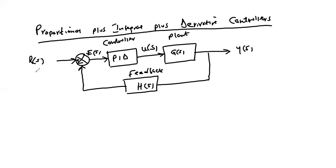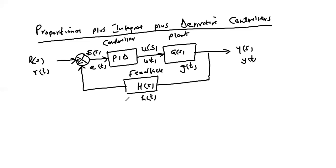If we model in the time domain, we would have input r(t), feedback h(t), plant g(t), output y(t), control signal u(t), and error signal e(t). Depending on whether we model in the time domain or s-domain, our system is represented accordingly in that block diagram.